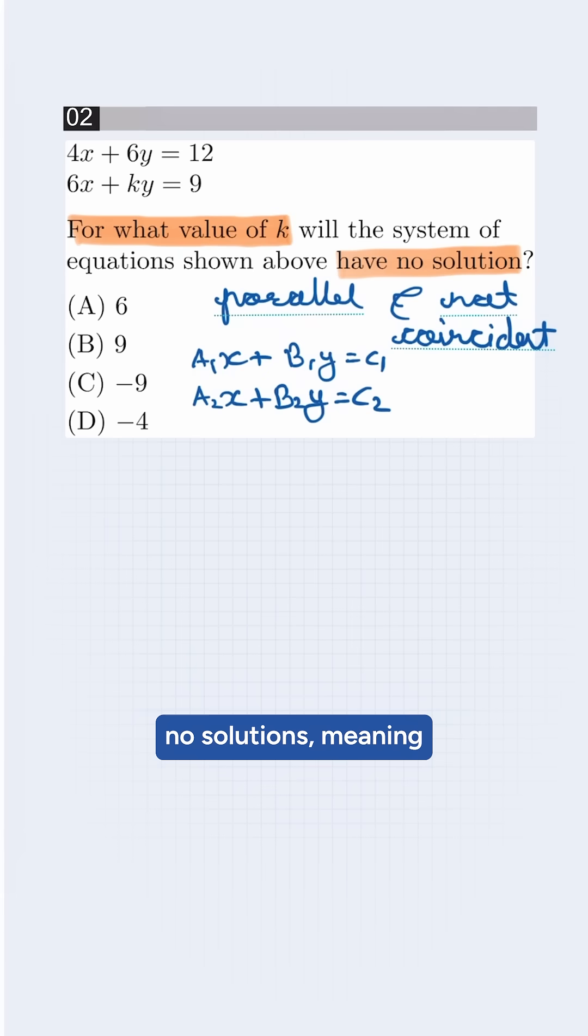So as it has no solutions, meaning they have different y-intercepts but same slope, the ratio will be a1 by a2 equals b1 by b2, which is not equal to c1 by c2.